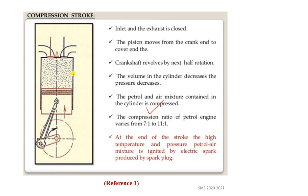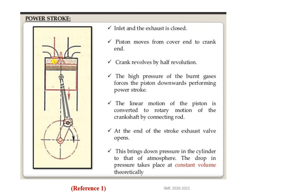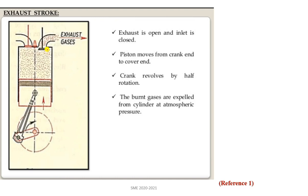Compression ratio is the ratio of total volume divided by clearance volume. In the power stroke, combustible gases force the piston from TDC to BDC, giving work output. In the exhaust stroke, the piston moves from BDC to TDC and exhaust gases leave through the open exhaust valve to the atmosphere.